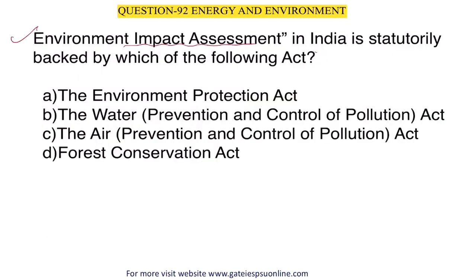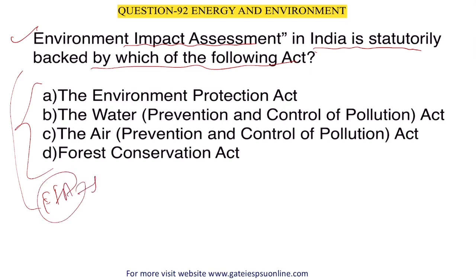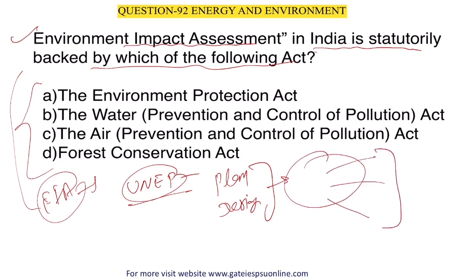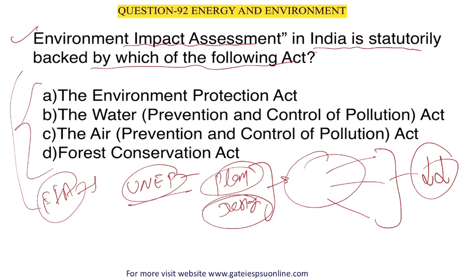Next question: Environmental Impact Assessment (EIA) in India is structurally backed by which act? EIA, as defined by UNEP (United Nations Environment Programme), is a tool to identify the environmental, social, and economic impact of a project prior to decision-making. At the planning and design stage, we assess what environmental, economic, and social impacts the project will have.